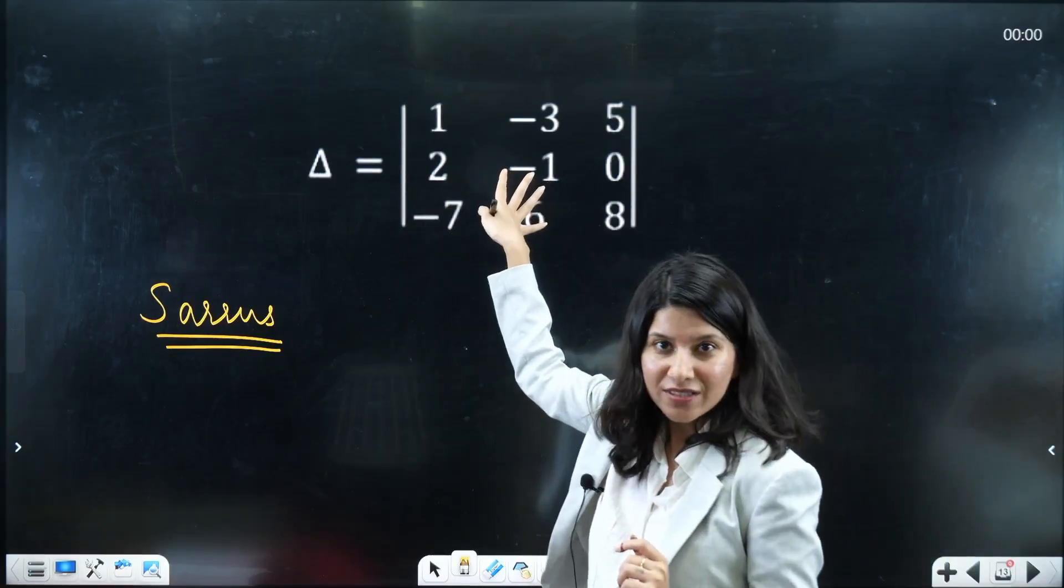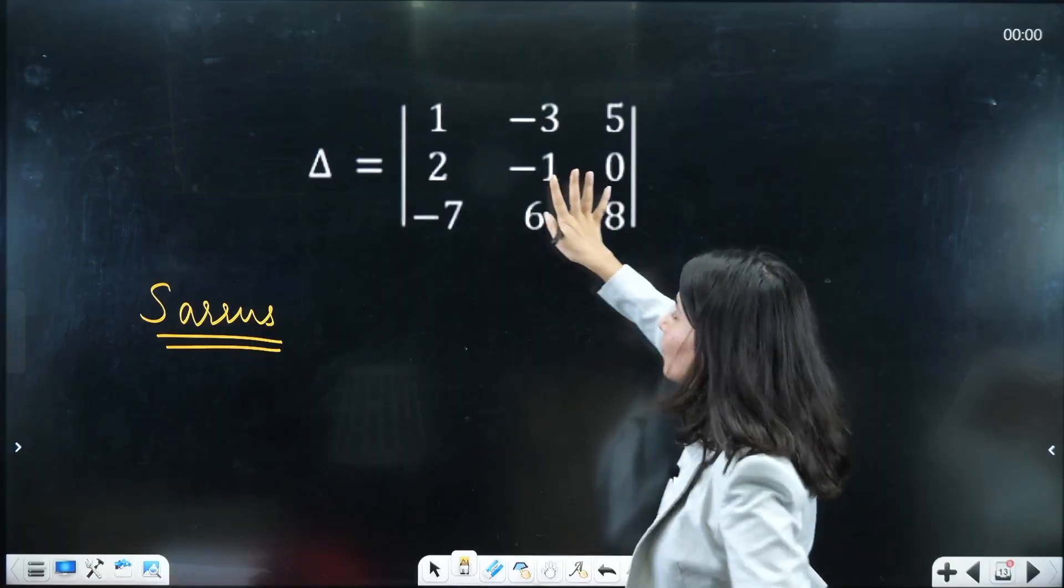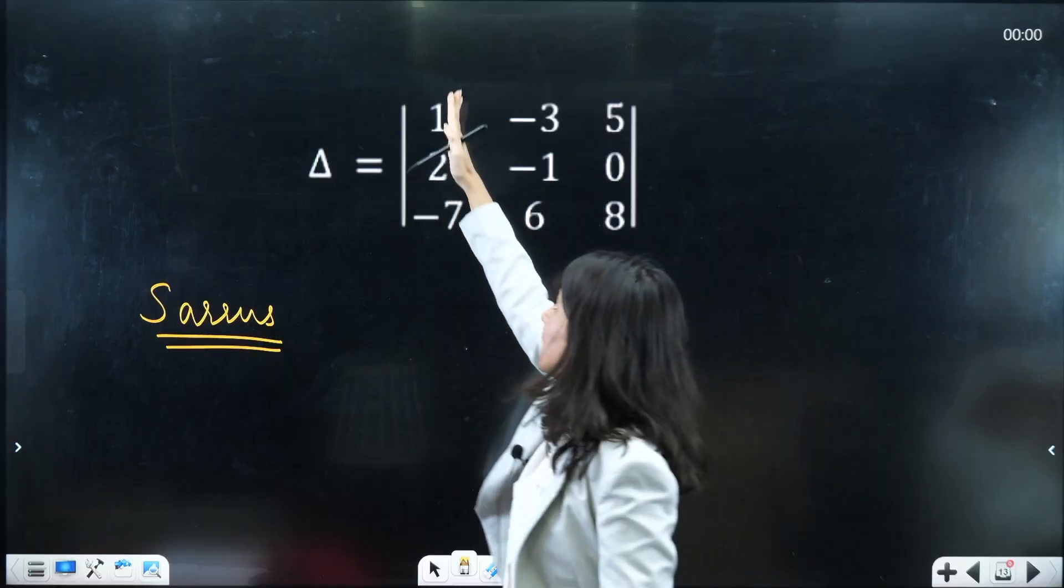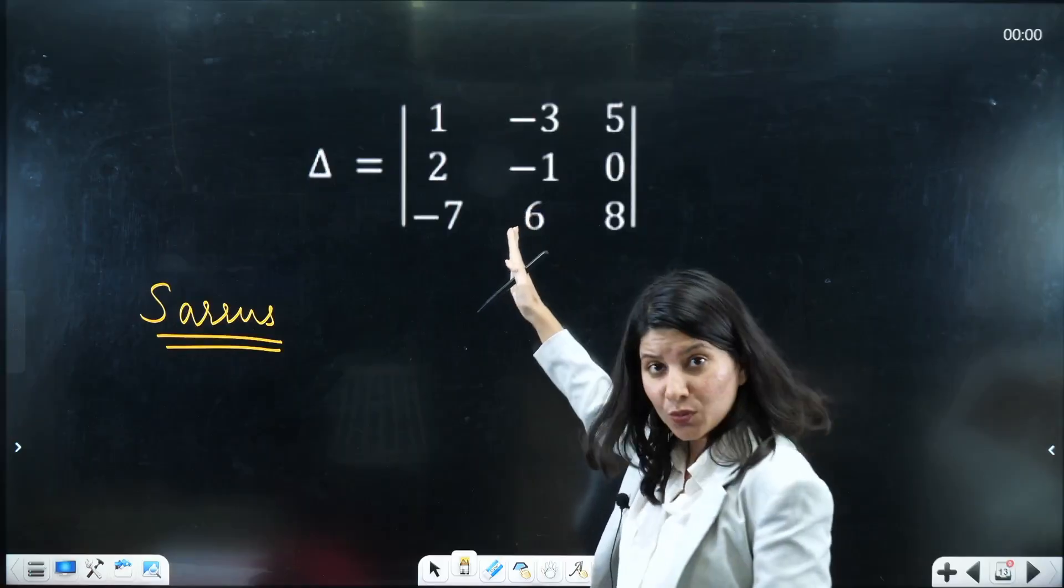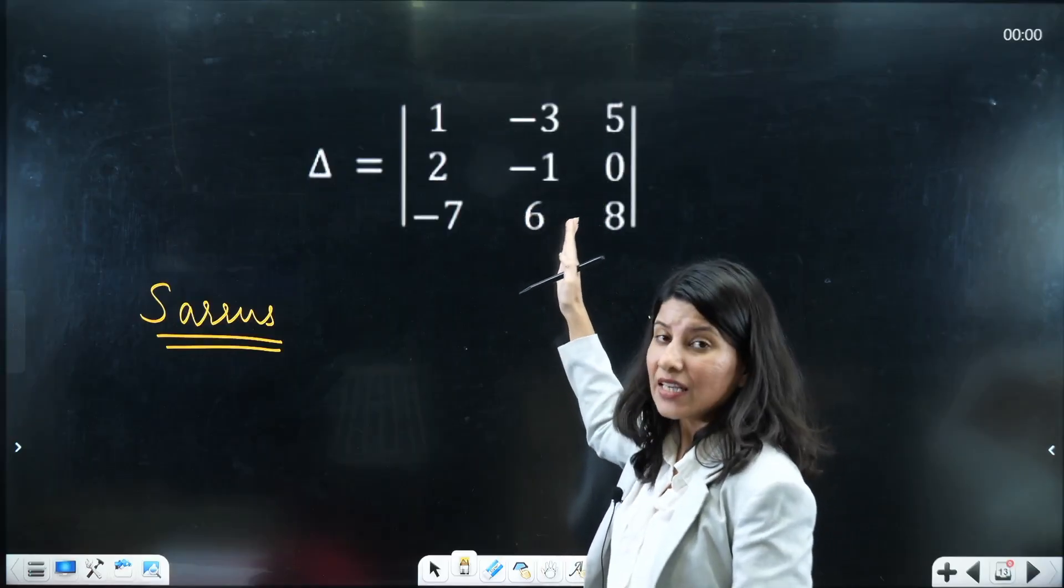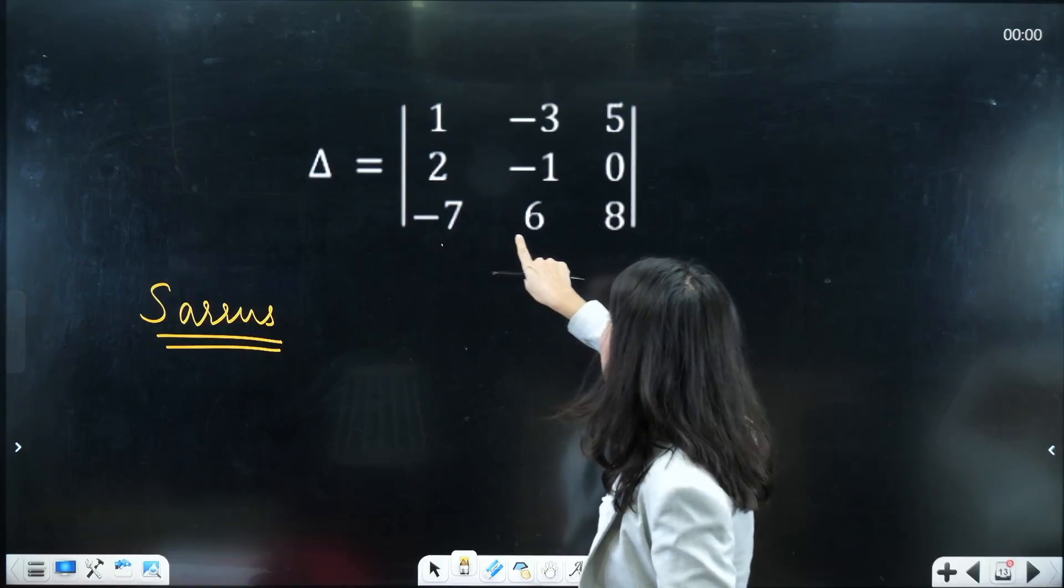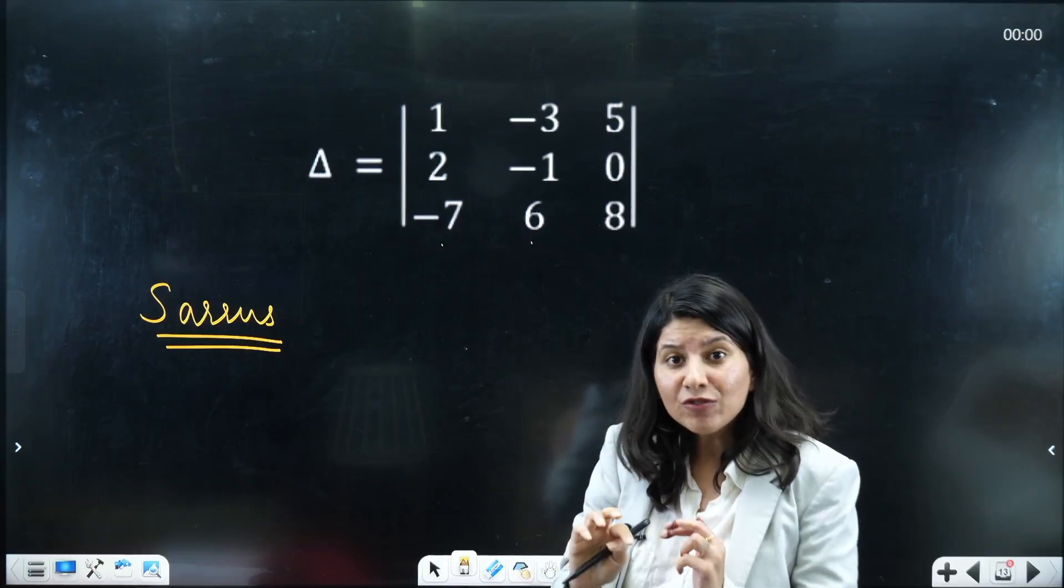So first of all this is a 3×3 determinant. Now what you will do is the first thing is this is your column 1, this is column 2 and this is column 3. Now what you will do is column 1 and column 2 you have to rewrite.